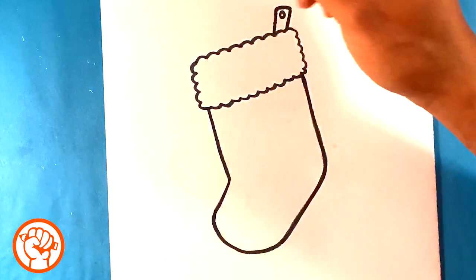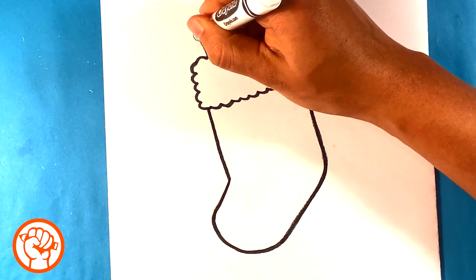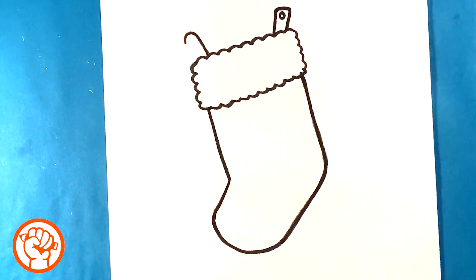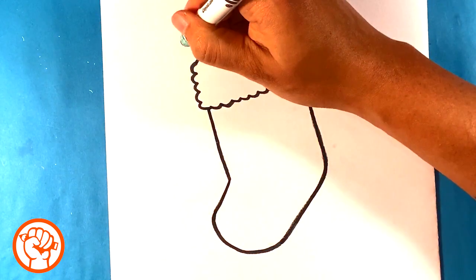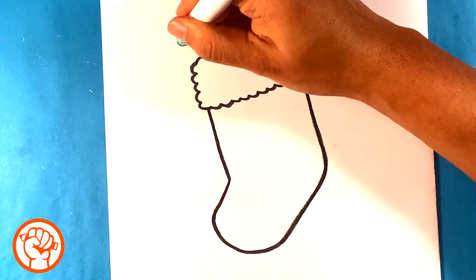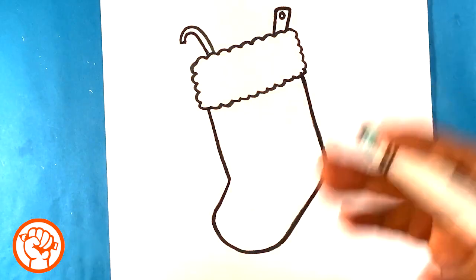But this time I want something in it. I want some stuff. So I'm going to draw a line here. I'm going to curve it. Line out. And I'm going to throw another curve here. So we got like a candy cane in there.